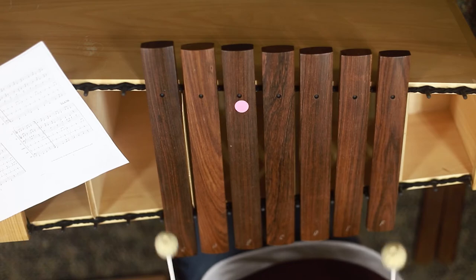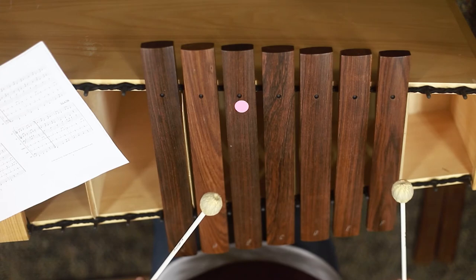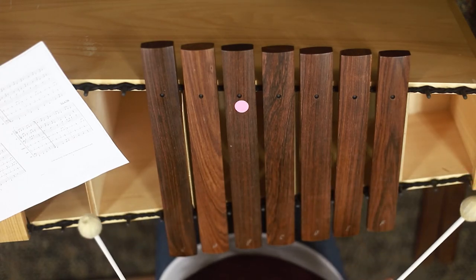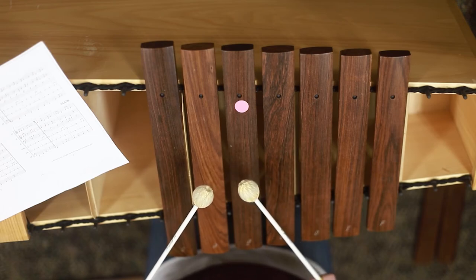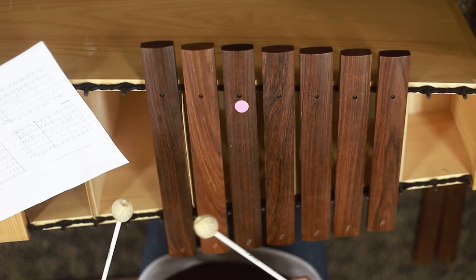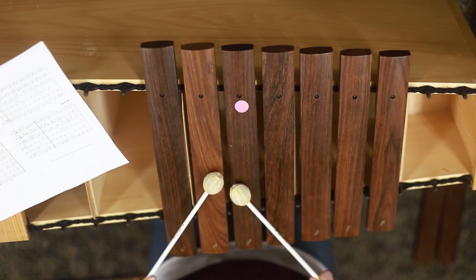The second part of B, the first two measures are going to be the same. And then the third measure is where it's going to change. It's going to go B, A, G, C, C, C, C. So the entire B section is going to sound like this.